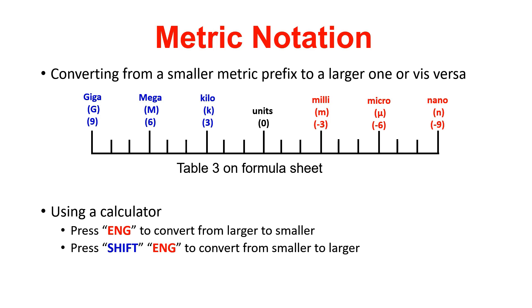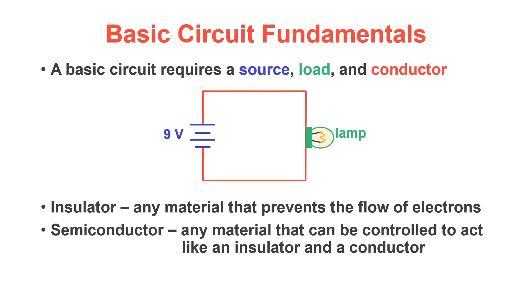You can use the linear scale located in table three to convert from a decimal number to a metric prefix. This can be done very quickly by utilizing a calculator. Press ENG to convert from a larger value to a smaller value and then pressing shift then ENG converts from a smaller value to a large value. When performing math operations with metric notation standard math rules apply.